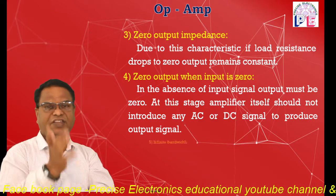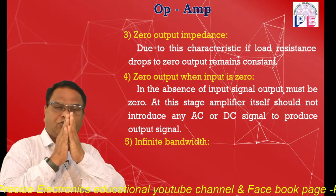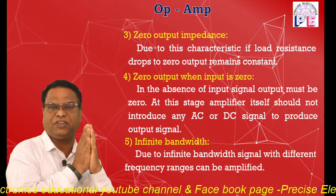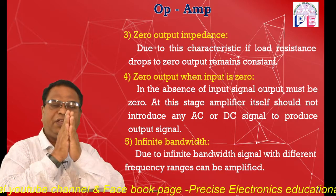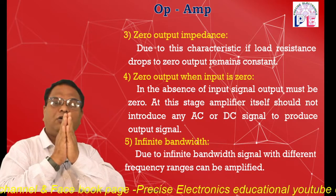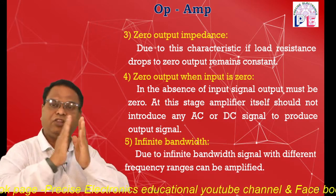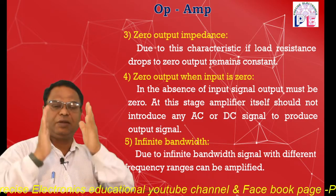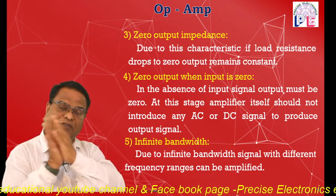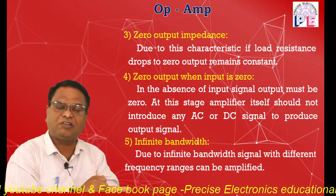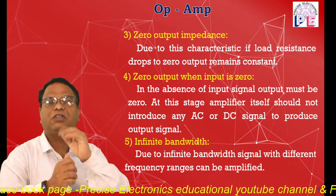The next characteristic is infinite bandwidth. Bandwidth is the difference between the higher frequency range and the lower frequency range. As the ideal amplifier has infinite bandwidth, it can faithfully amplify signals of different frequency ranges — both low frequency signals and very high frequency signals — by using this perfect or ideal amplifier.